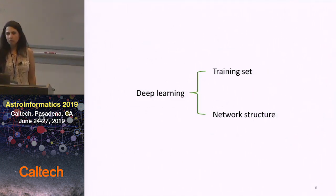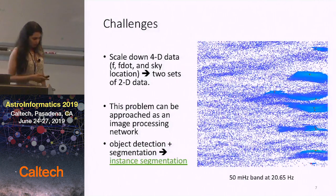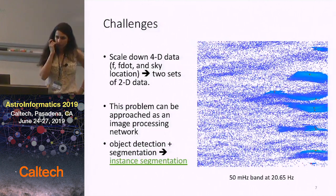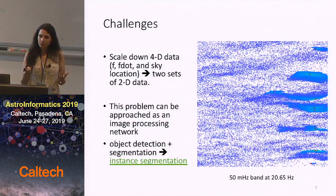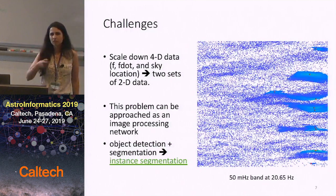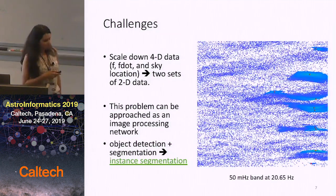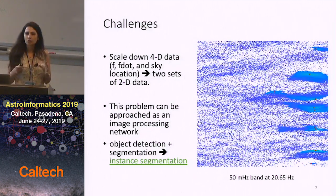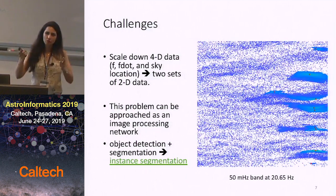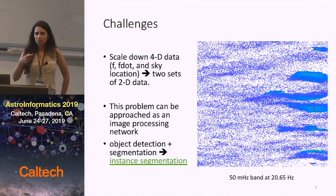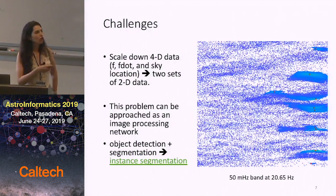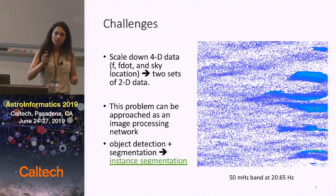For deep learning, we need a training set. What we are doing is assigning our dataset into an image. As I discussed, this may not be the best approach but it is what we came up with, and we are open to better ideas. Since we have four-dimensional data — frequency, frequency derivative, and two sky locations — and four-dimensional imaging networks are not as powerful as two-dimensional ones right now, we are dividing our dataset into two sets of two-dimensional data.